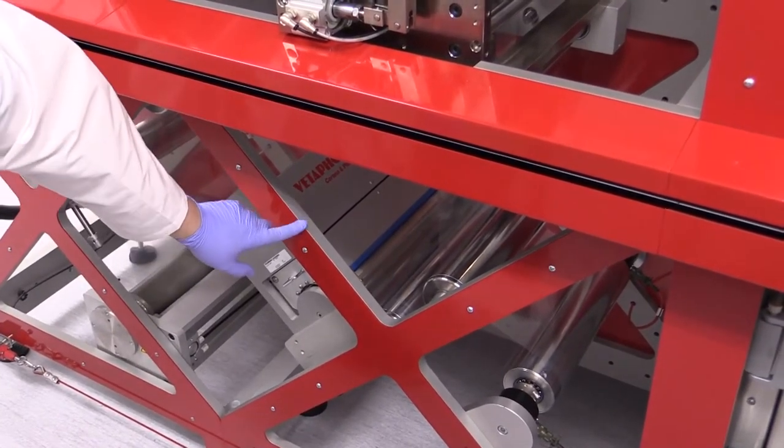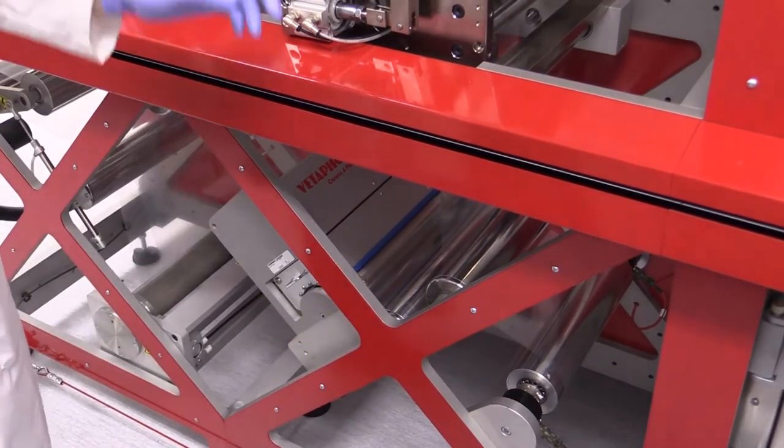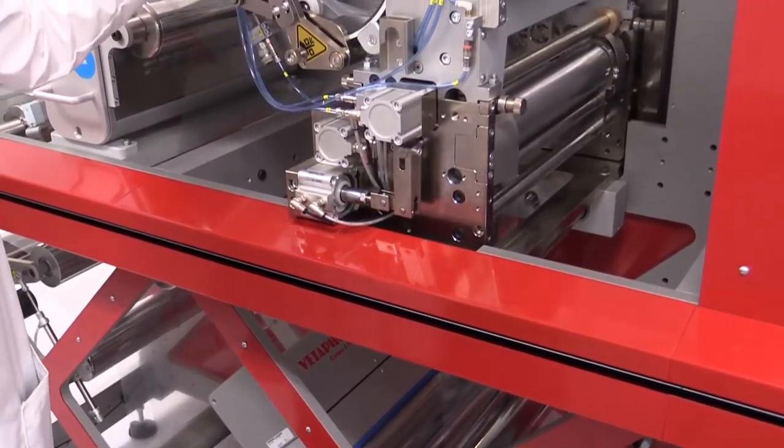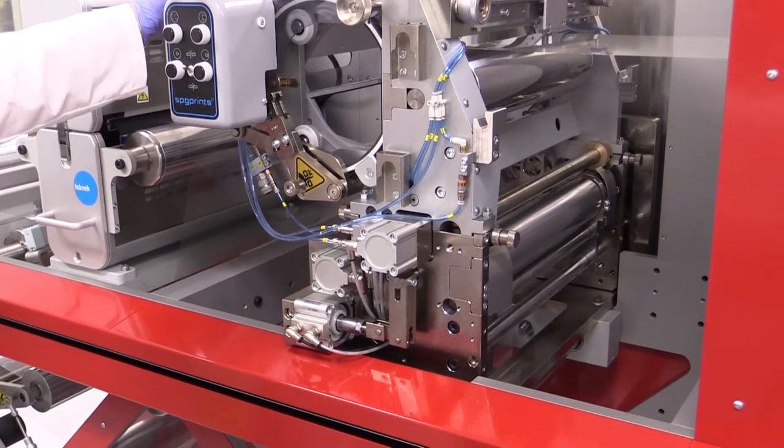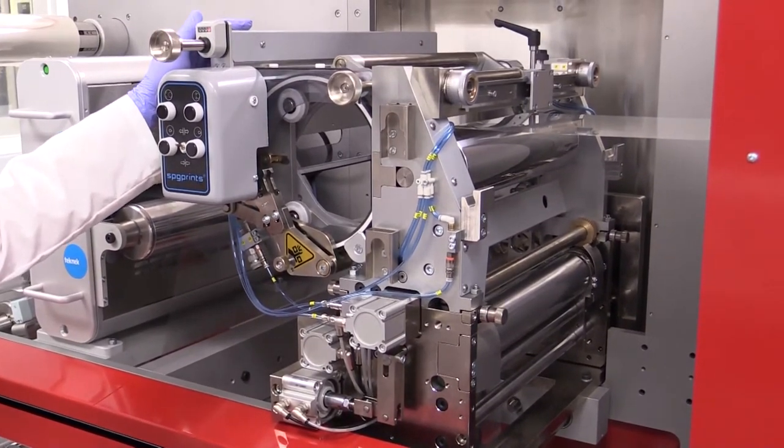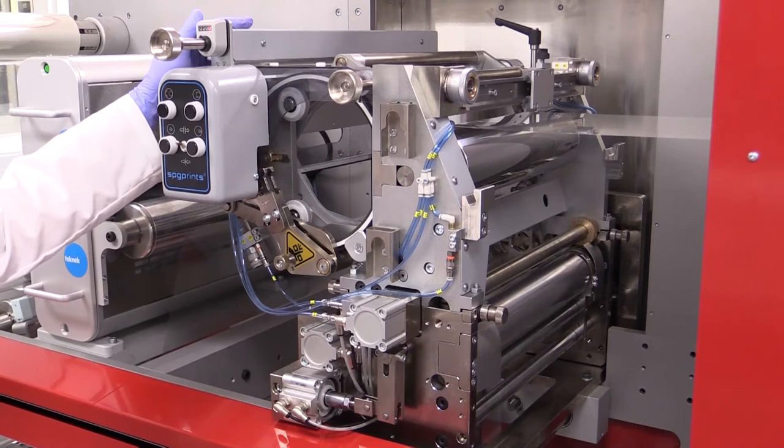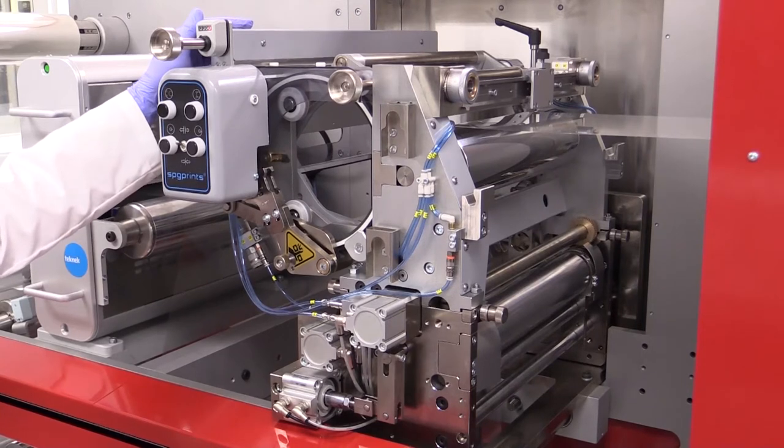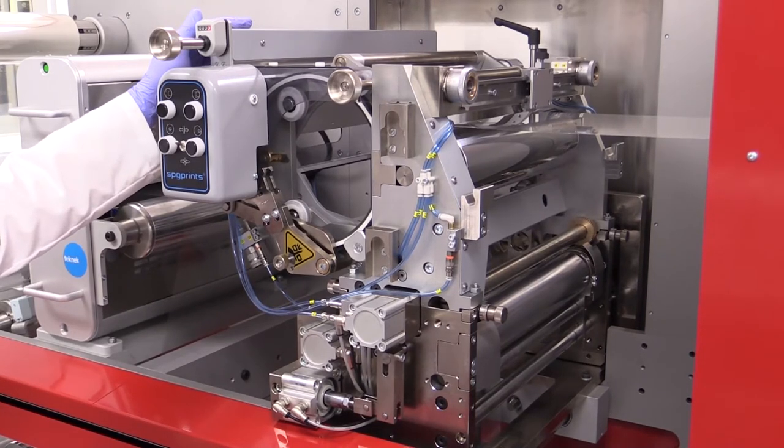The film will pass through up and into the first print station. The print station we have here is a screen printing station. With this you can put down patterned films, patterned electrode contacts allowing you to set up individual cells along your roll.